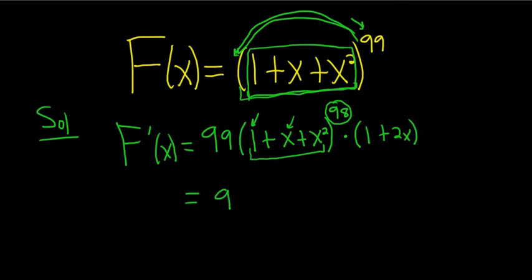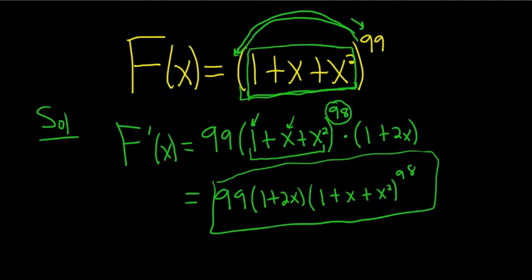Let me go ahead and rewrite this as 99. I'll put the 1 plus 2x in the front, and the rest is the same, 1 plus x plus x squared to the 98th power. And that's the final answer.